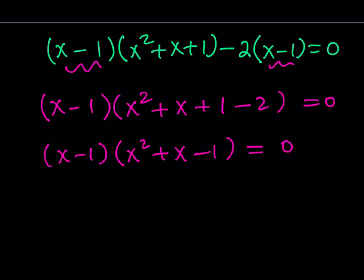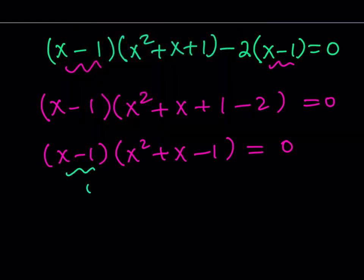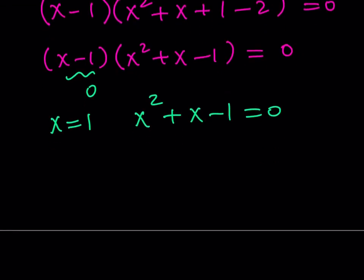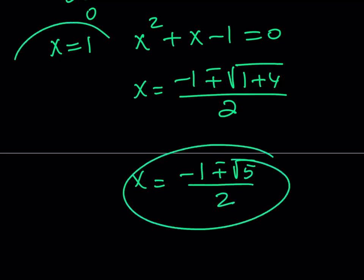So x minus 1 equals 0. Obviously, we already know that. This gives us x equals 1. We know it. What about the second part? Well, the second part is quadratic, and we can solve it by using the quadratic formula. It says x equals negative b plus minus the square root of b squared, which is 1, minus 4ac, which is plus 4, and that gives us the nice radical, which gives us the golden ratio. x equals negative 1 plus minus root 5 over 2. That's another solution besides the x equals 1.